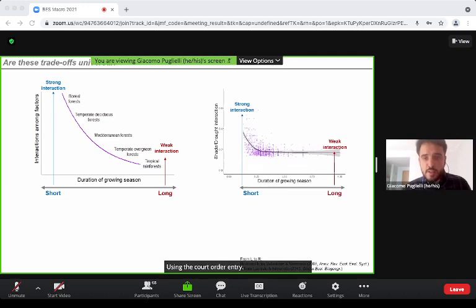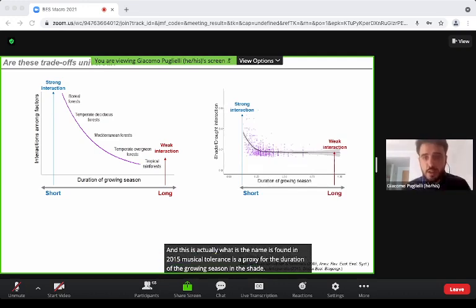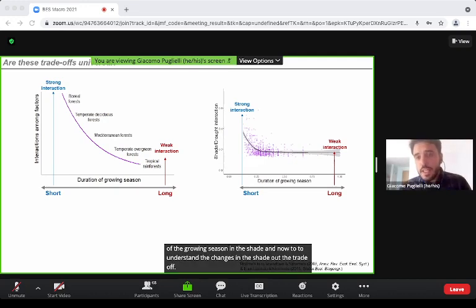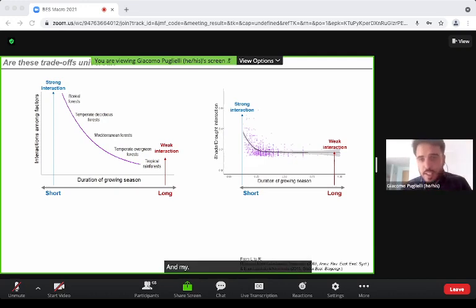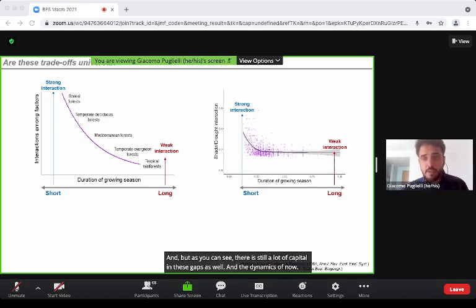They used cold tolerance as a proxy of the duration of the growing season, and shade and drought to understand the changes in the shade-drought trade-off. But as you can see here, there is still a lot of scatter in this graph as well, and the trade-off dynamics are still poorly understood.